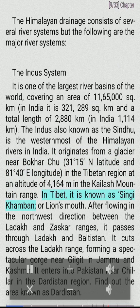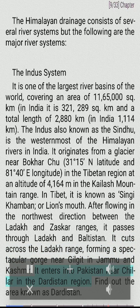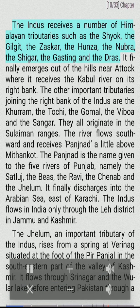In Tibet, it is known as Singi Khamban or 'Lion's Mouth.' After flowing in the northwest direction between the Ladakh and Zaskar ranges, it passes through Ladakh and Baltistan. It cuts across the Ladakh range forming a spectacular gorge near Gilgit in Jammu and Kashmir, and enters Pakistan near Chillar in the Dardistan region. The Indus receives a number of Himalayan tributaries such as the Shyok, Gilgit, Zaskar, Hunza, Nubra, Shigar, Gasting, and Dras, and finally emerges out of the hills near Attock where it receives the Kabul river on its right bank.